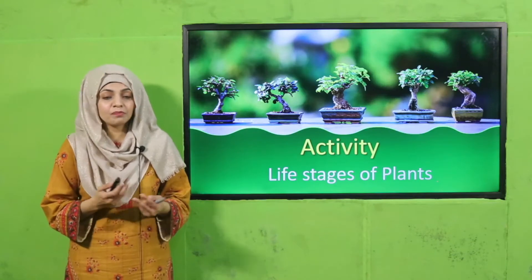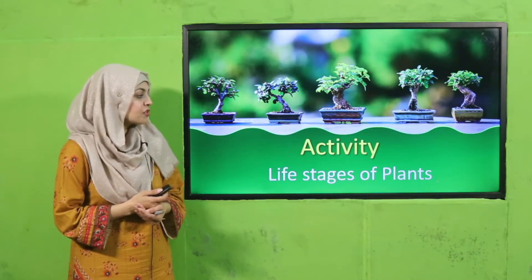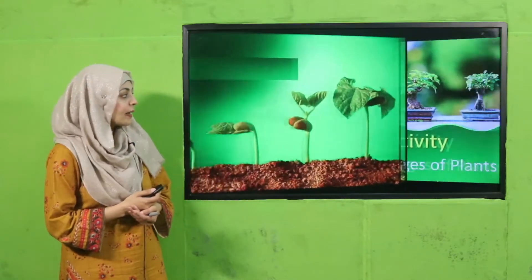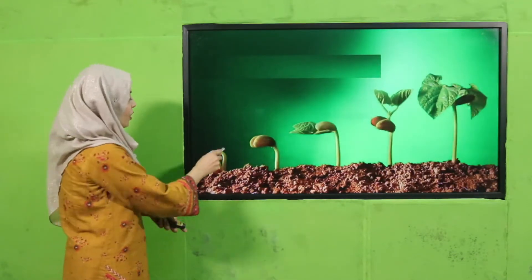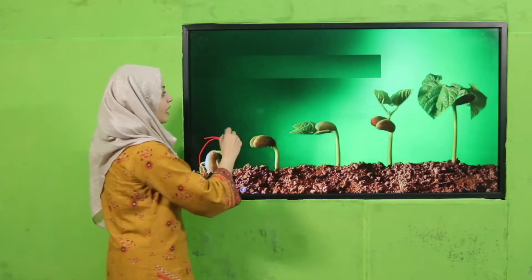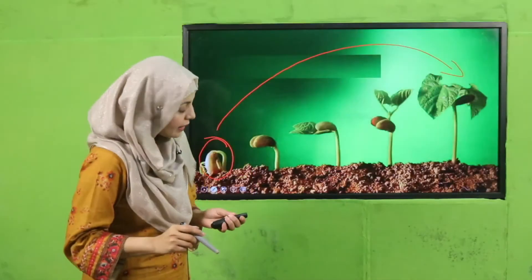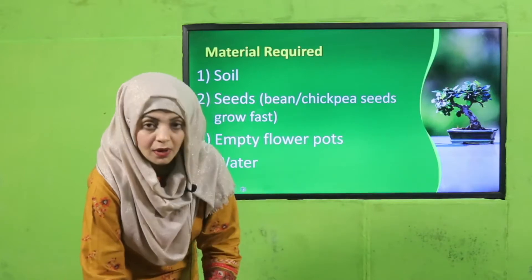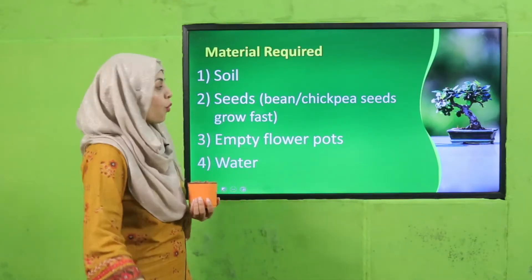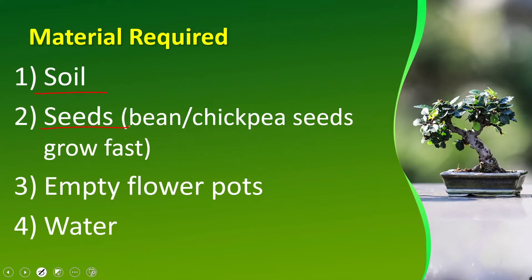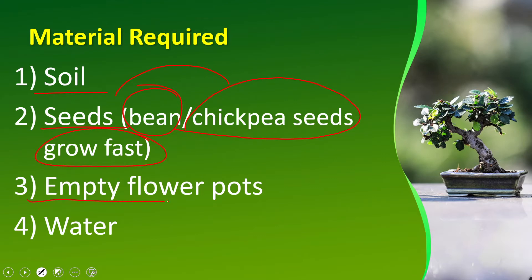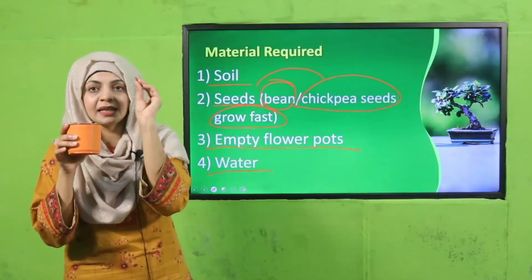Let's start the unit with an activity: Life Stages of Plants. First, we will see how plants grow — tiny plants start and then they grow into a big plant. So how does this happen? For this, we will plant a seed. The materials required are soil, seeds — you can take any type of seeds, bean seeds or chickpea seeds — and you need an empty flower pot and some water.